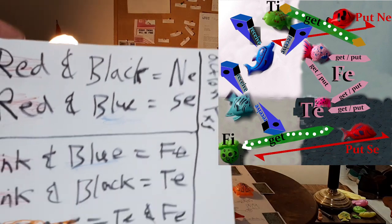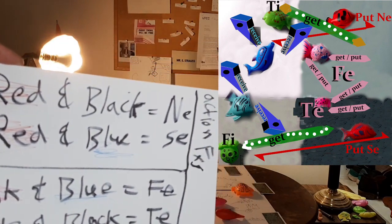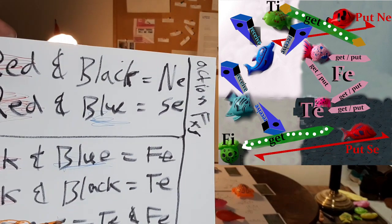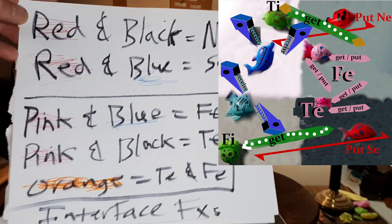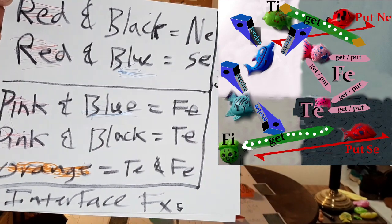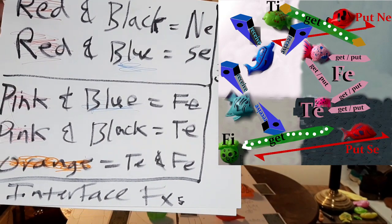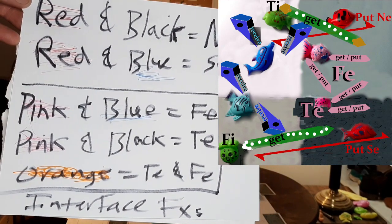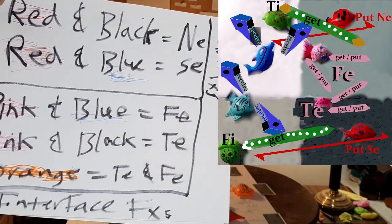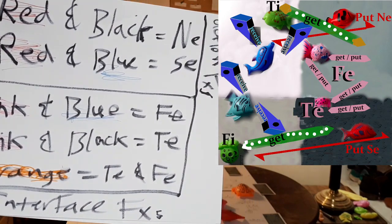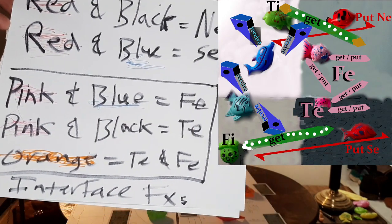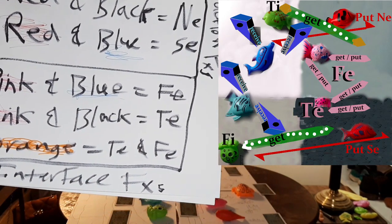Red and black equal NE fish. Red and blue equal SE. Your interface functions: pink and blue equals FE, pink and black equals TE, and orange equals both CE and FE.